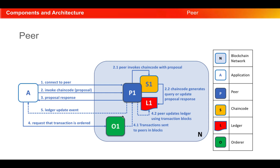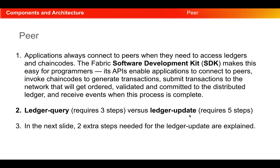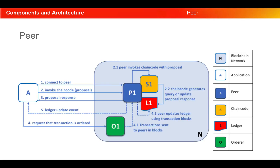When it comes to a ledger update, the application connects to the peer and invokes the chaincode as the first step. The peer invokes the chaincode with the proposal, and the chaincode generates an update proposal response. The proposal response is then sent back to the application. Next, the request for the transaction to be ordered is sent to the orderer. The orderer orders the transaction, creates blocks, and sends those blocks to the peers. The peers then update the ledger using the transaction blocks. Finally, the ledger update event occurs. This is the five-step process for a ledger update.